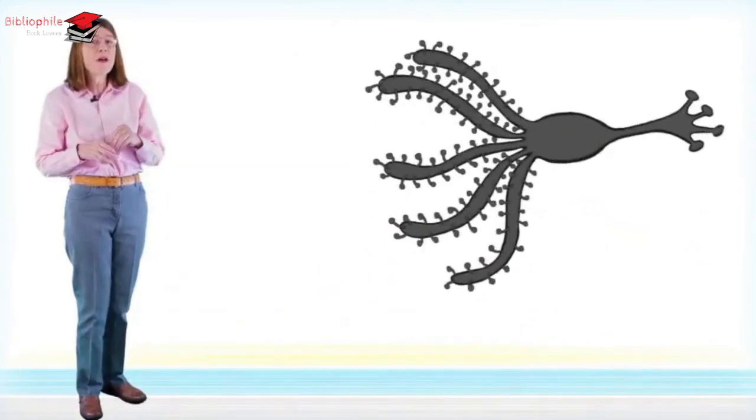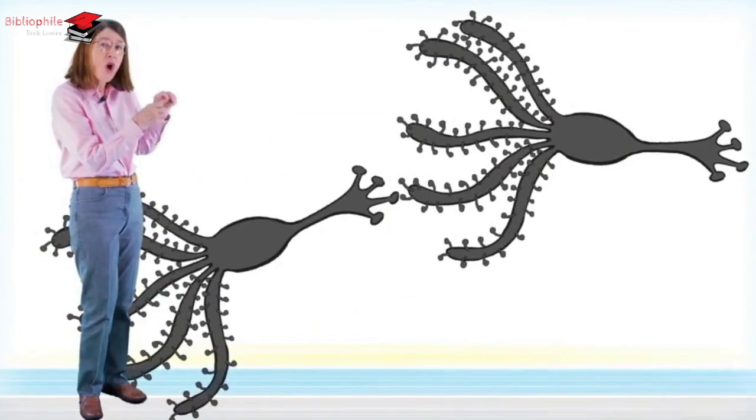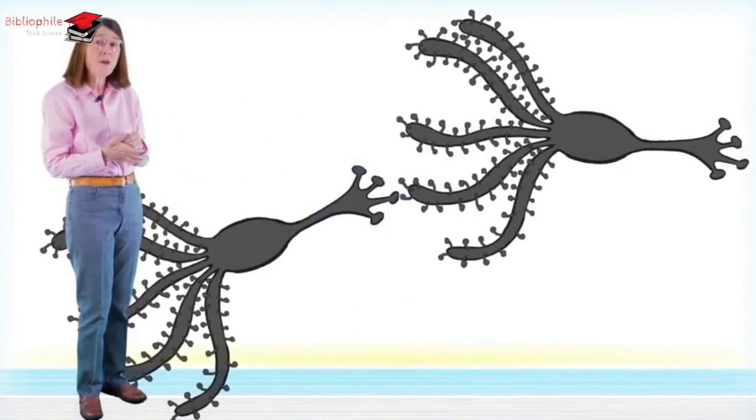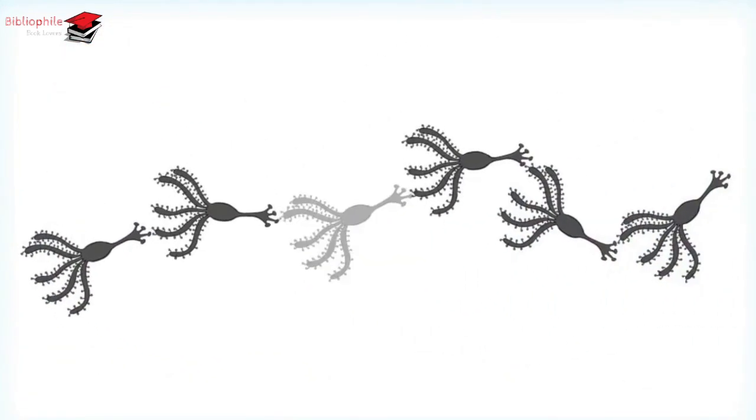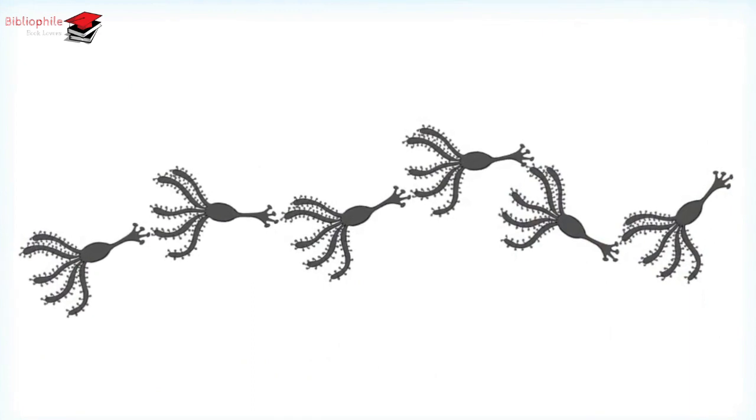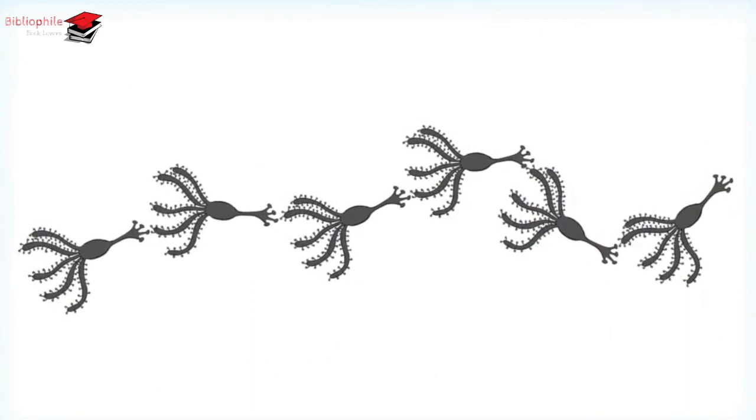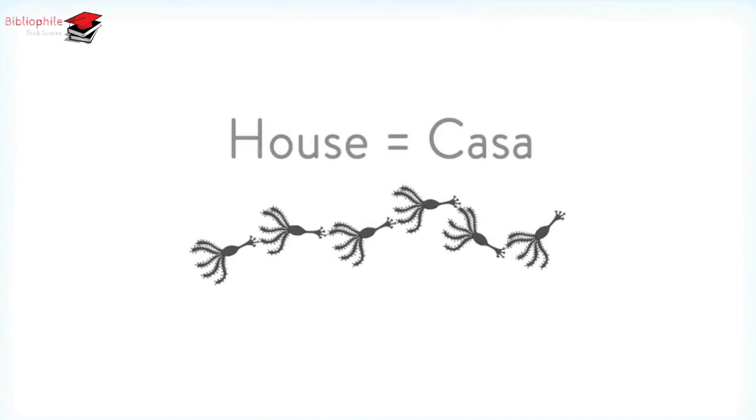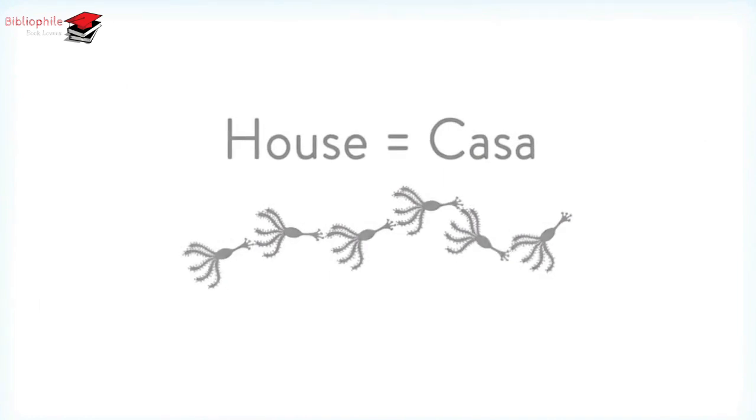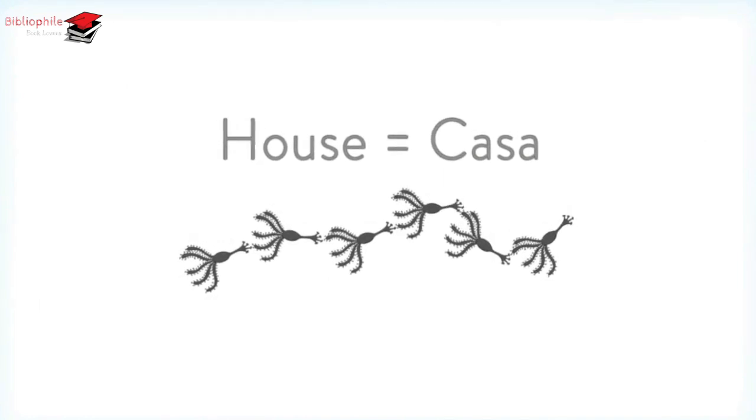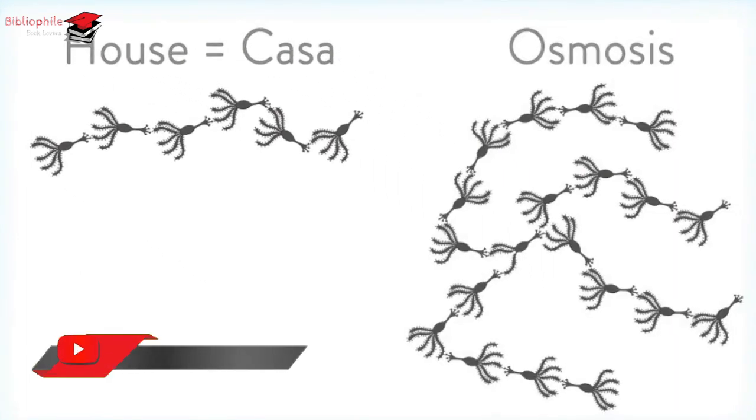Every time you learn something, neurons connect arms to toes with one another. They form sets of links in your long-term memory. A simple fact, such as the Spanish word for house, is stored as a short set of links. Something more complicated, like the meaning of the word osmosis, will be stored in a more complex set of links.